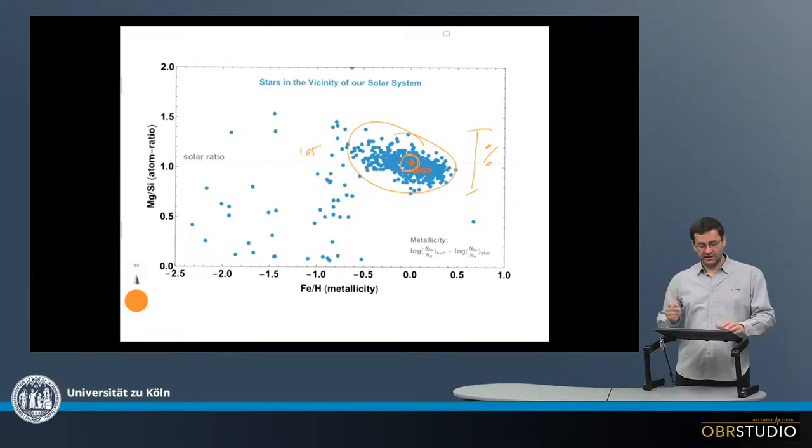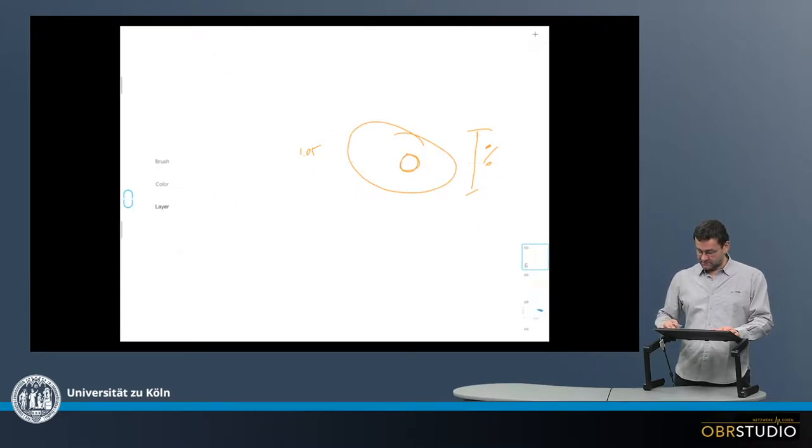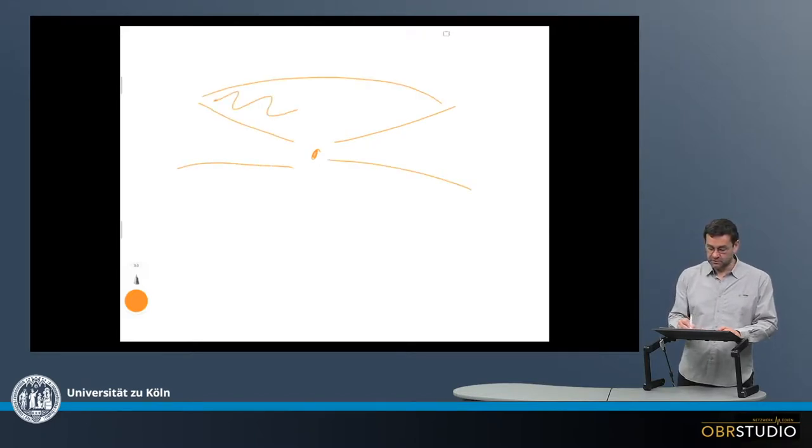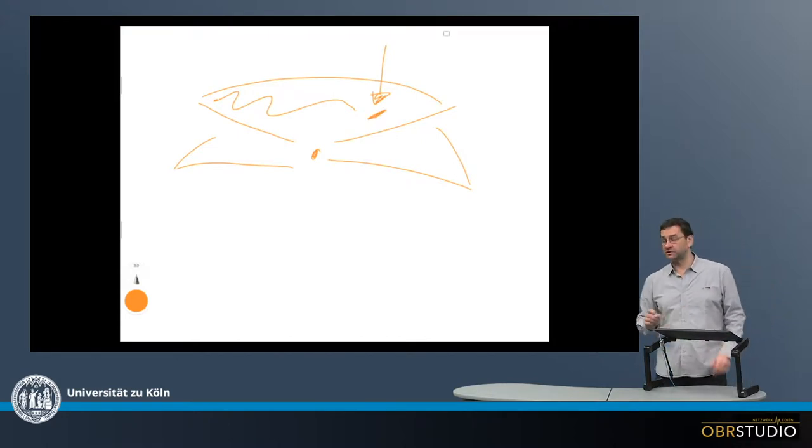Now there is one slight caveat. And this is that when we look at the protoplanetary disk from the edge on from the side, so there is the star in the center and then there is this protoplanetary disk. It looks something like that. So it goes round here, something like this. And we look at, or astronomers look at the protoplanetary disks. They look at the surface of it.